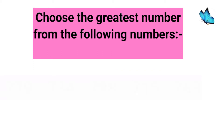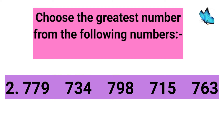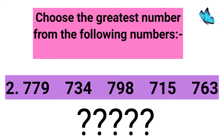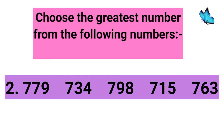Now let's see another example. Children, again here is a set of numbers and you have to find out the greatest number. Again you have to look at the first digit — but the first digit is the same in all the numbers. In this case you will look at the second digit of all the numbers: 7, 3, 9, 1 and 6. From all these underlined digits, you have to find out which digit is greatest. The greatest digit is 9, so the greatest number will be 798.